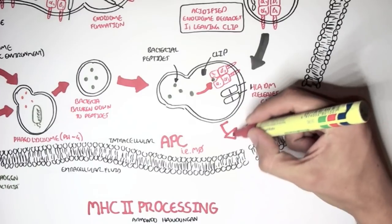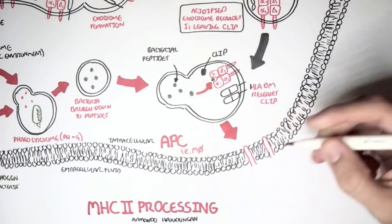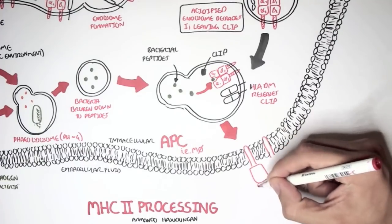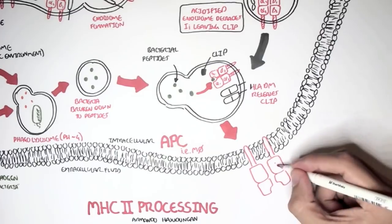After a specific antigen binds onto the groove of the MHC class II, the macrophage, which is an antigen-presenting cell, will express it on its cell surface. So here, this is MHC class II with an antigen.